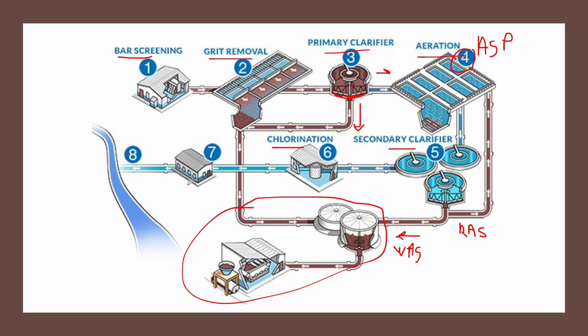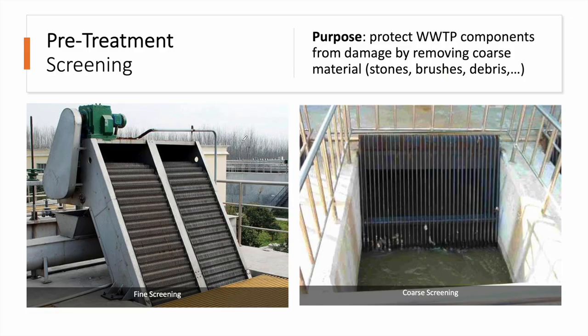Once fully treated, the wastewater can be safely disposed — for example, into a river — or reused, depending on your local regulations and the quality of the treated water. Now we will cover the treatment stages in detail. The first stage in any wastewater treatment plant is screening, and its purpose is to protect the treatment plant components from being damaged.